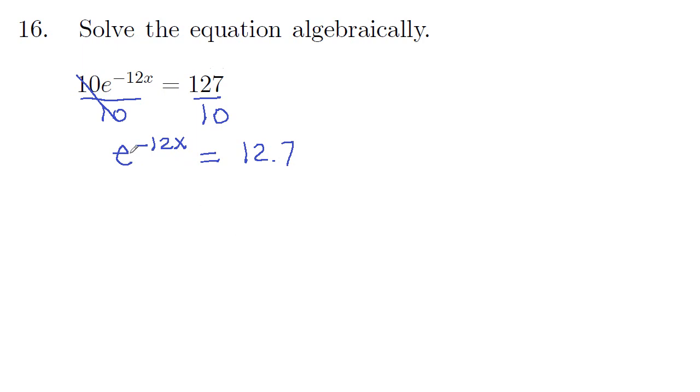And now we want to undo an exponential. We'll do that by taking a log. So take the log on both sides. Natural log of e to the negative 12x will equal natural log of 12.7.